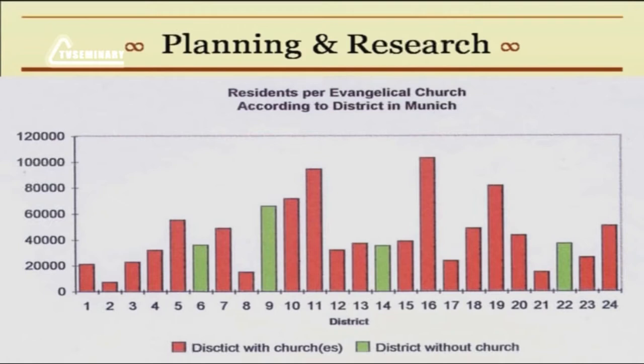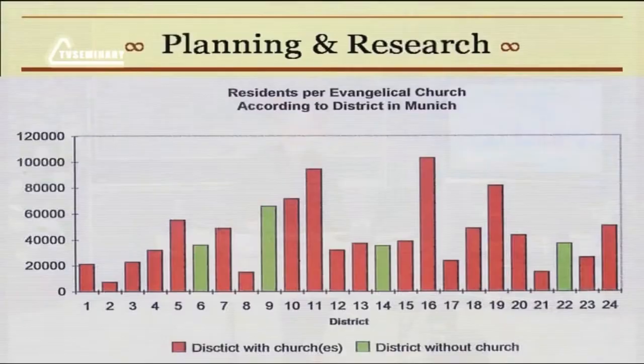But look at District 11 — one church would have to reach nearly 100,000 people. Or District 16 — one church would have to reach nearly 100,000 people. These were tremendously spiritually needy communities without many local churches. What is more, the green beams represent districts where we could not identify a single church preaching the gospel and attempting to reach out. For example, District 9 had roughly 60,000 people with no gospel-preaching church. And so we began to get a feel for where, if we were going to plant new churches, the spiritual need was greatest.